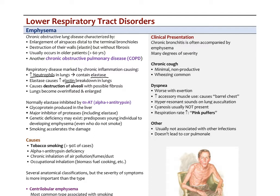Normally, elastase is inhibited by another enzyme called alpha-1 antitrypsin (alpha-1-AT), a glycoprotein produced by the liver that protects the lungs and other tissues from elastase. It is a major inhibitor of proteases like elastase. Unfortunately, some people have a genetic deficiency with a mutated copy of the alpha-1 antitrypsin gene, and these individuals may develop emphysema at a very young age — even without smoking. Smoking would of course accelerate the damage.